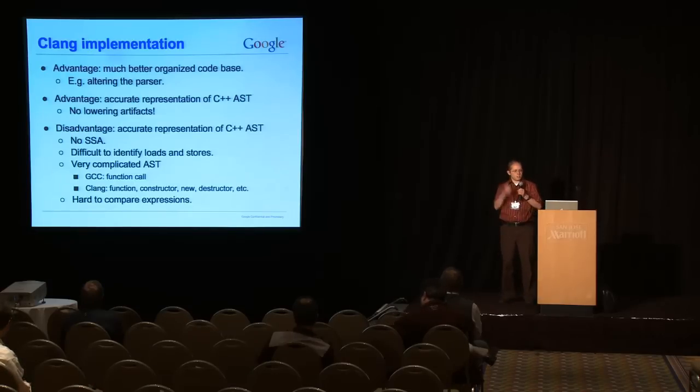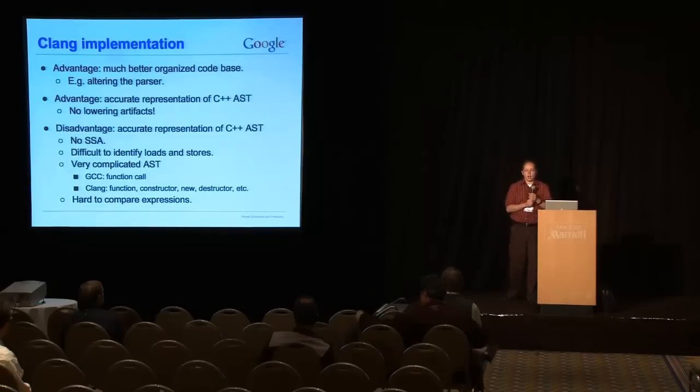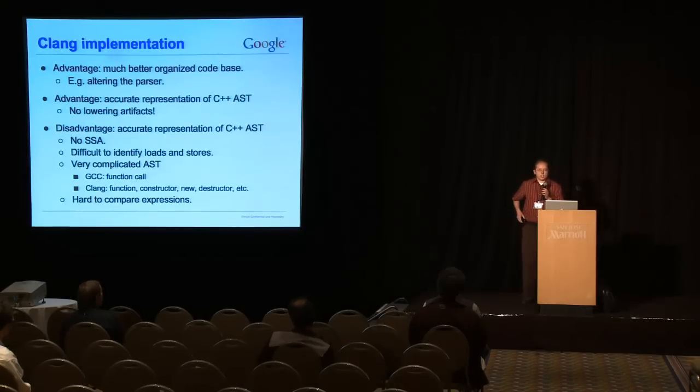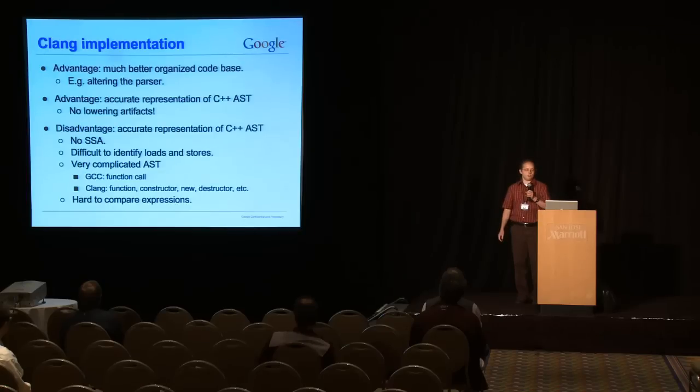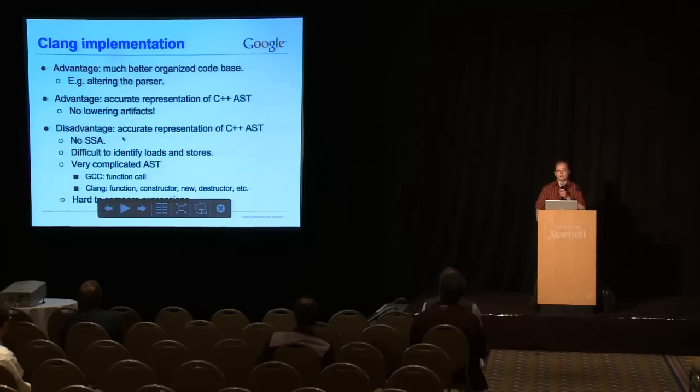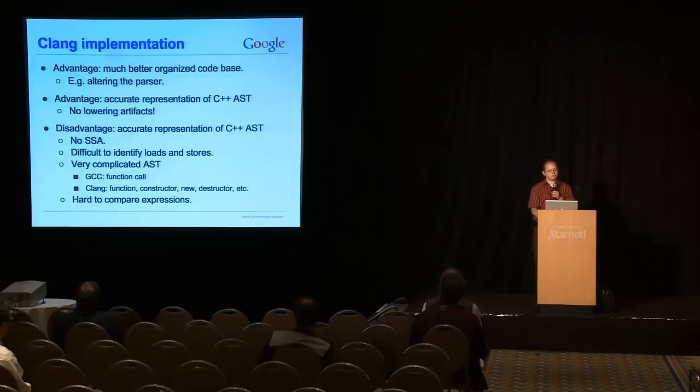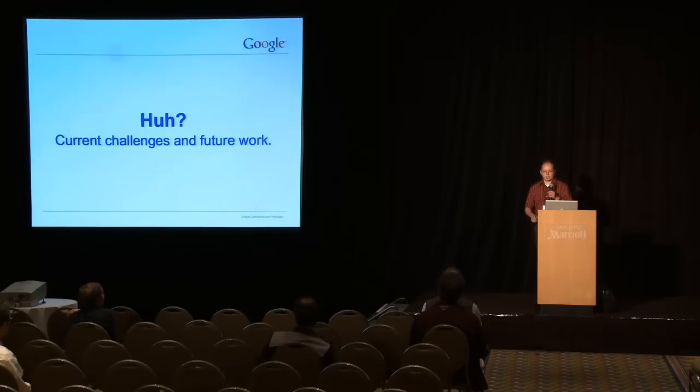So we have good reasons to want to move this to Clang. The good news is Clang has a much better organized code base, much easier to do certain things like altering the parser. Another huge advantage of Clang, you get an accurate representation of the C++ abstract syntax tree. A huge disadvantage of Clang is you get an accurate representation of the C++ abstract syntax tree. C++ is a very complicated language, and the AST is not fun to work with. So whereas in GCC, you'd have just a function call. In Clang, you've got function calls, you've got method calls, you've got constructors, you've got destructors, you've got calls to new, all of which have to be traversed and handled separately. It's very difficult to compare expressions.